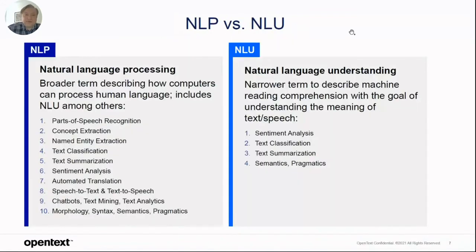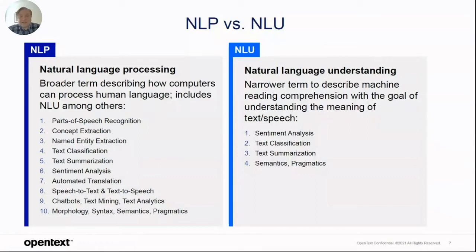NLP is a broader term to describe how computers can process human language. This includes many different types, methods, and approaches, plus science. Parts of speech recognition is a typical NLP task. Automated translation is also an NLP task. This is used for chatbots, text mining, and text analytics. The background for this comes from computational linguistics, and in a broader term, linguistic fields such as morphology, syntax, semantics, and pragmatics.